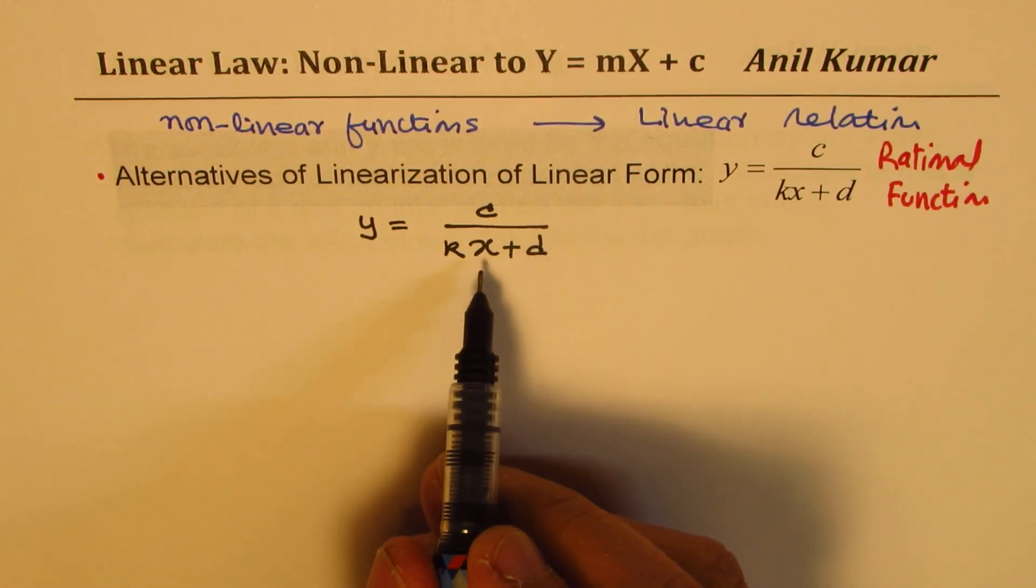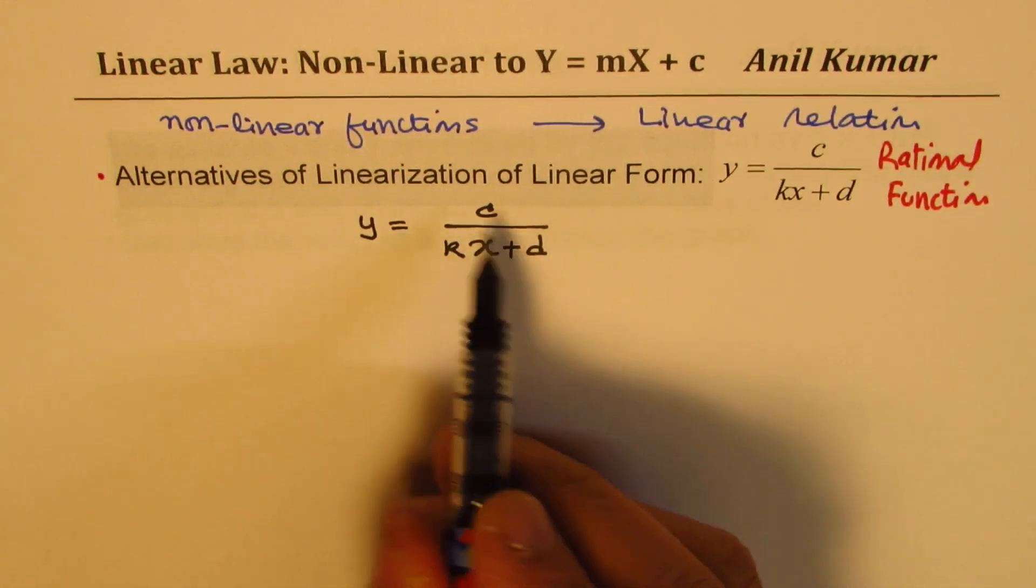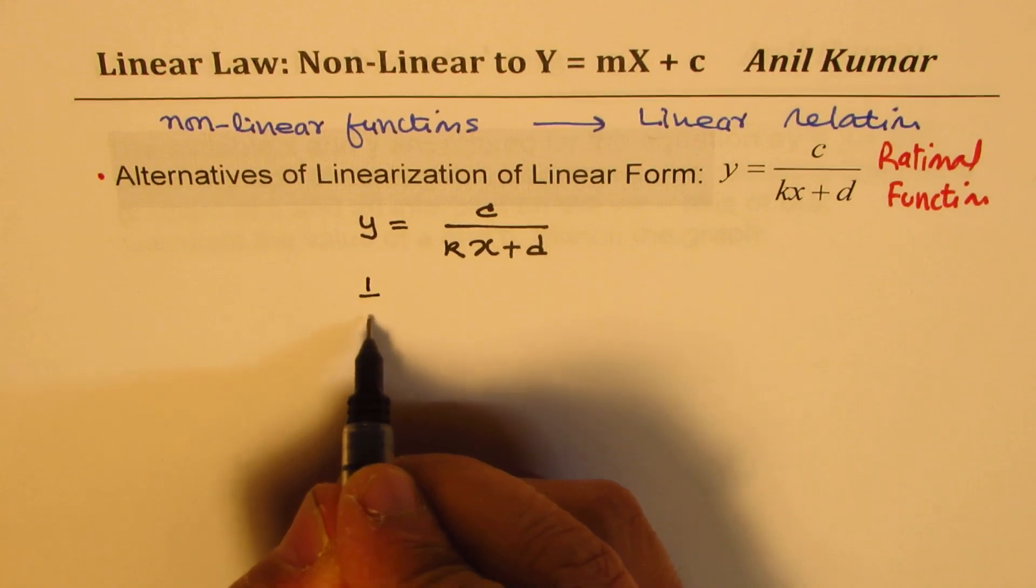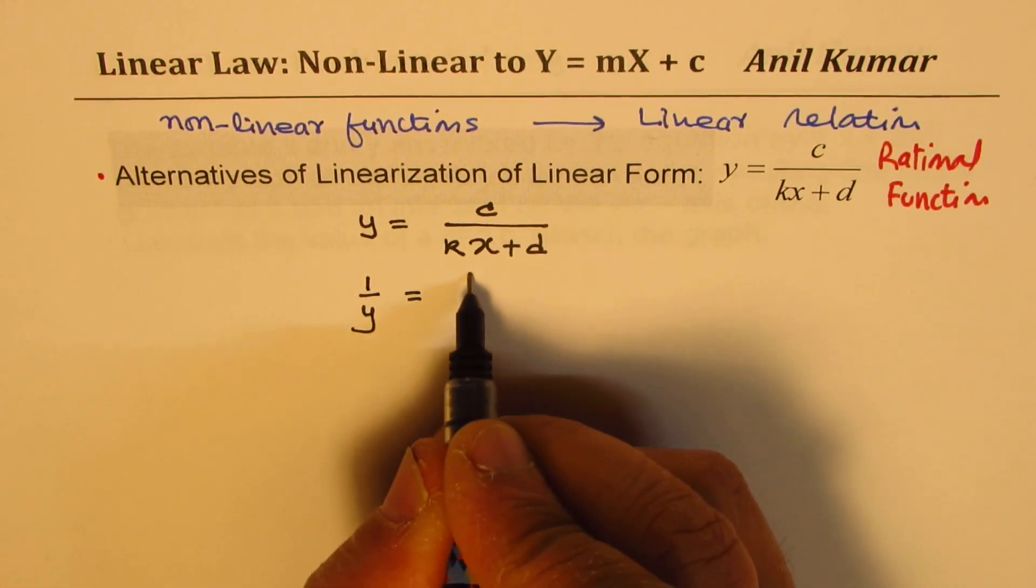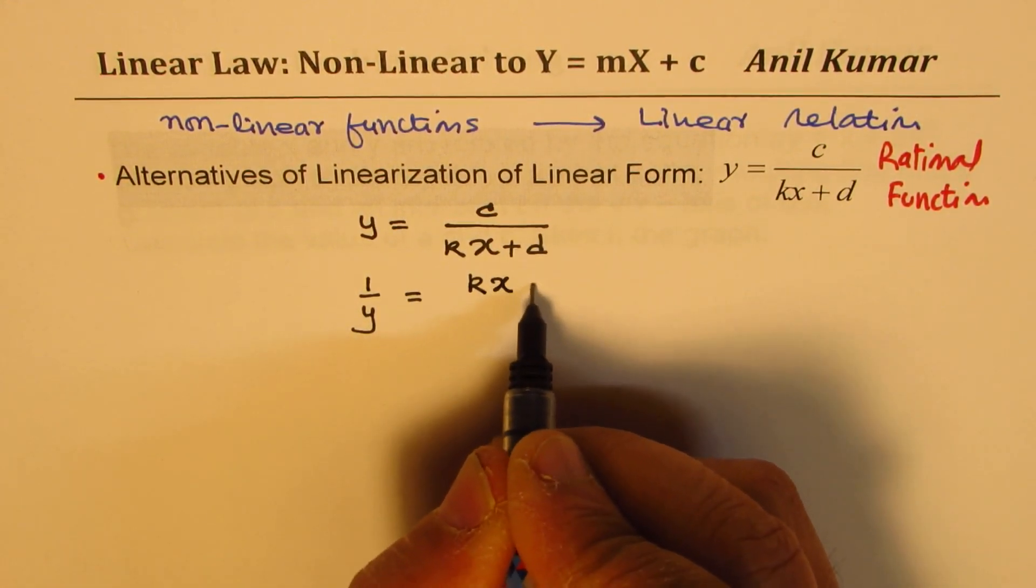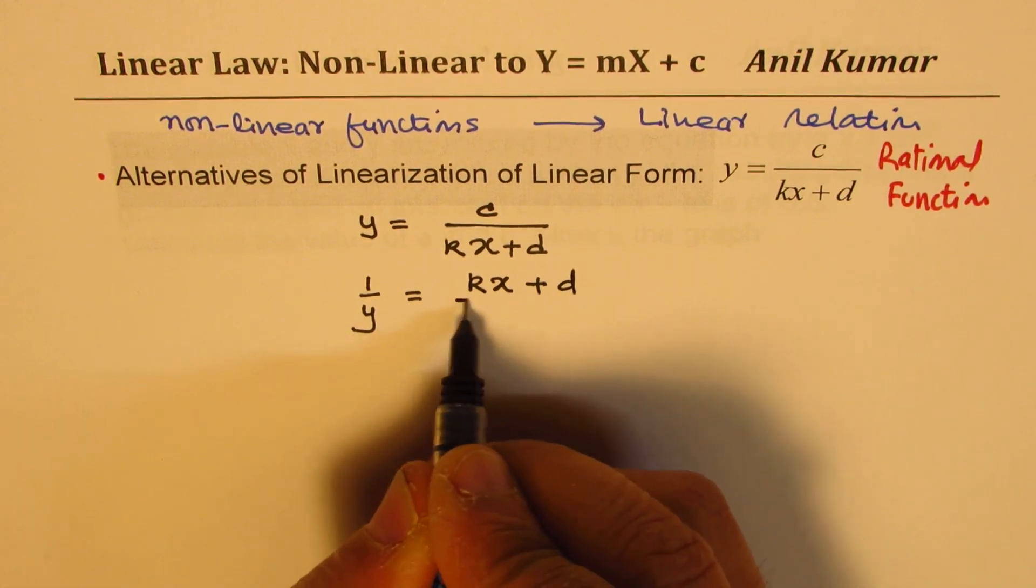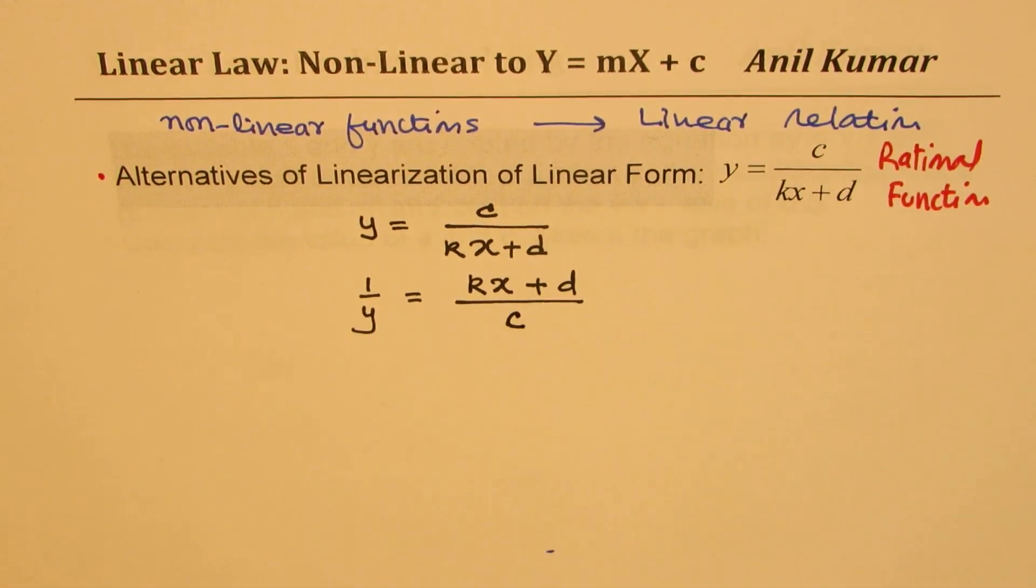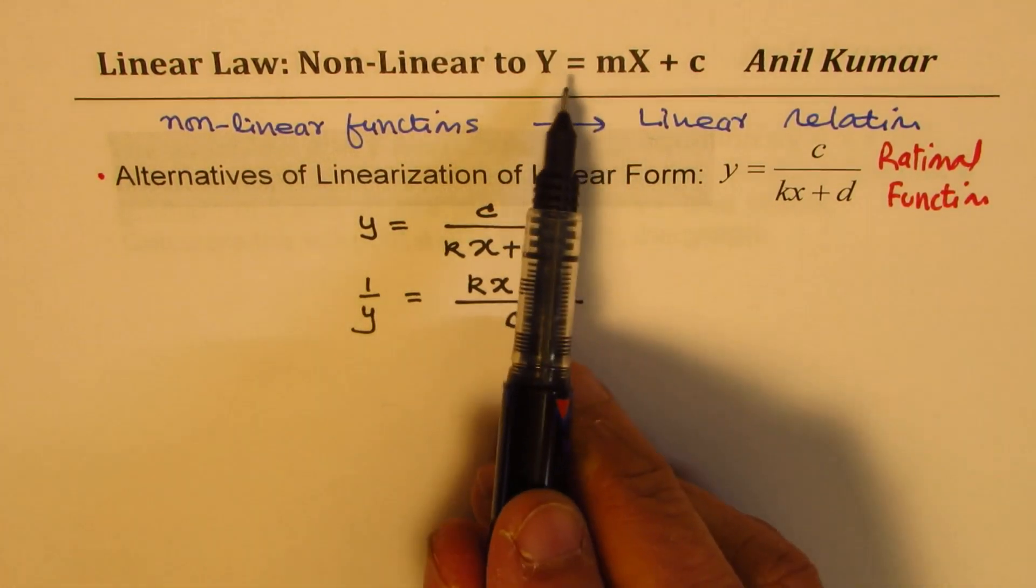So, what we have here is y equals to a constant c over a constant k times x plus d. Now, to begin with, we could just flip it and we could write 1 over y as equal to k times x plus d over c.